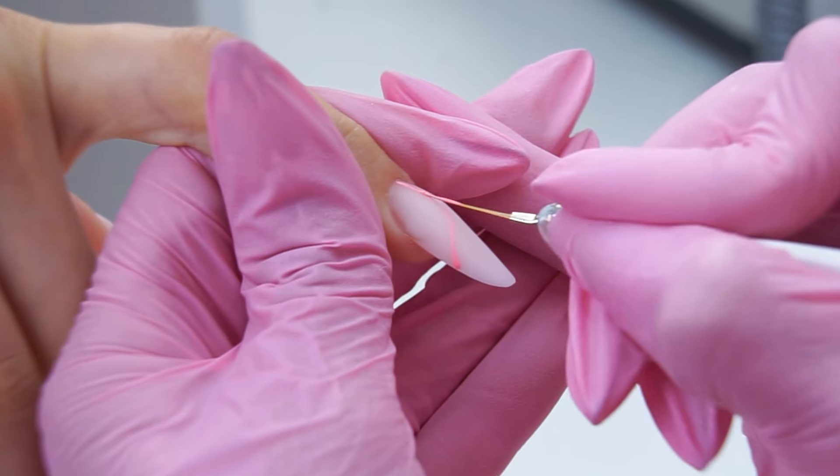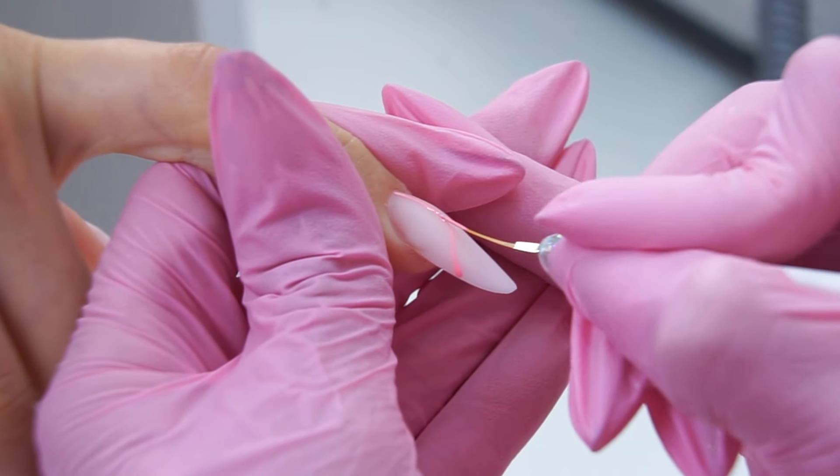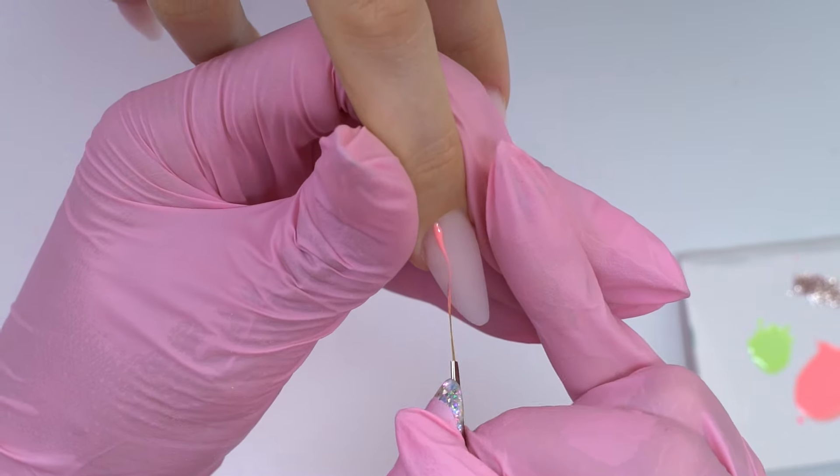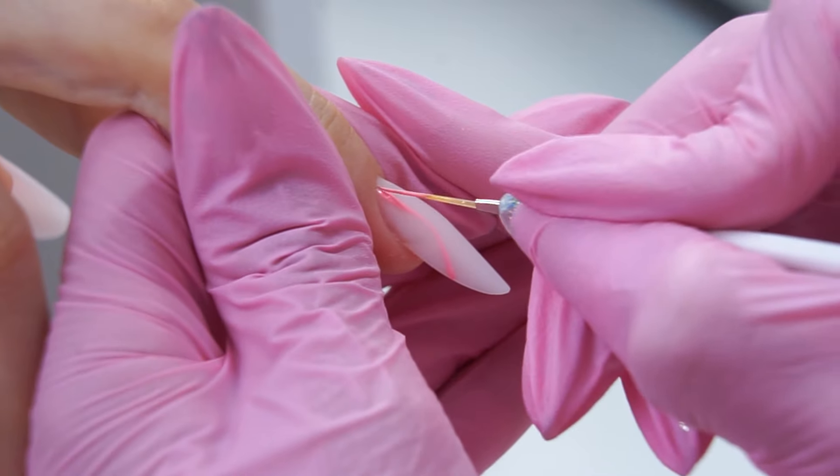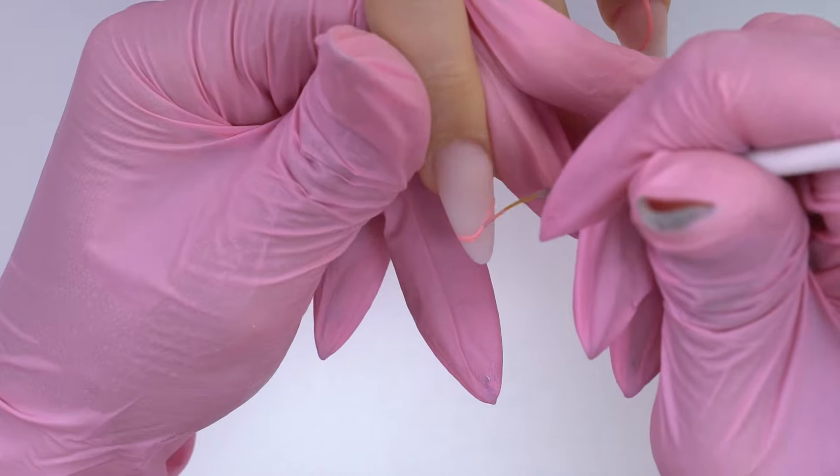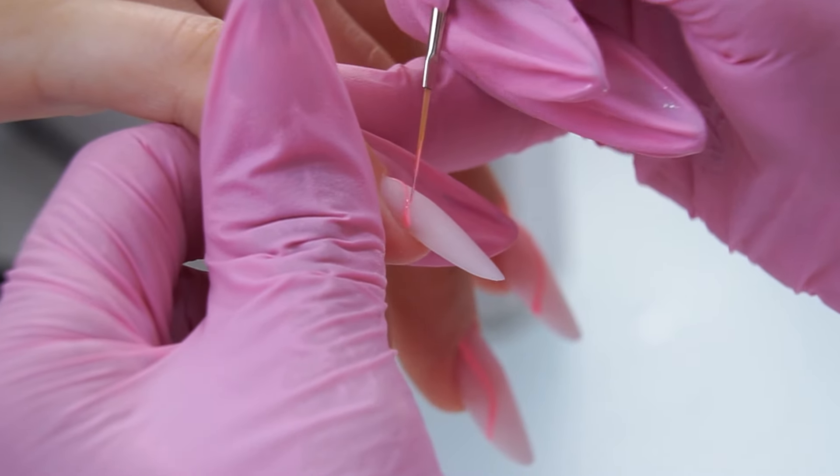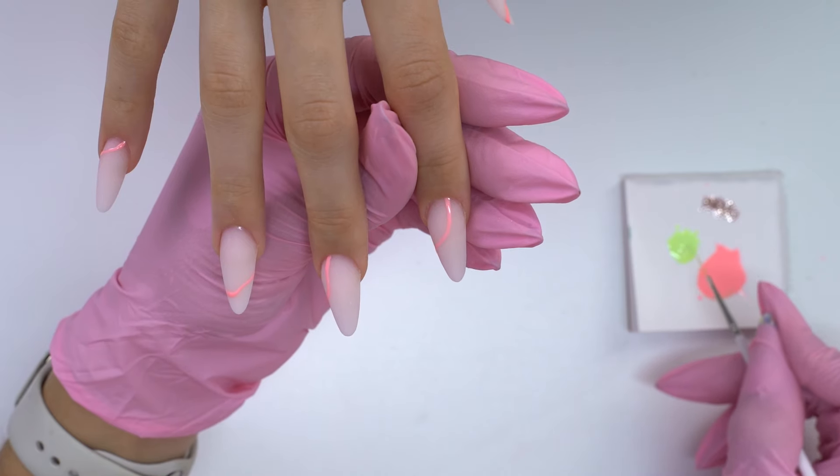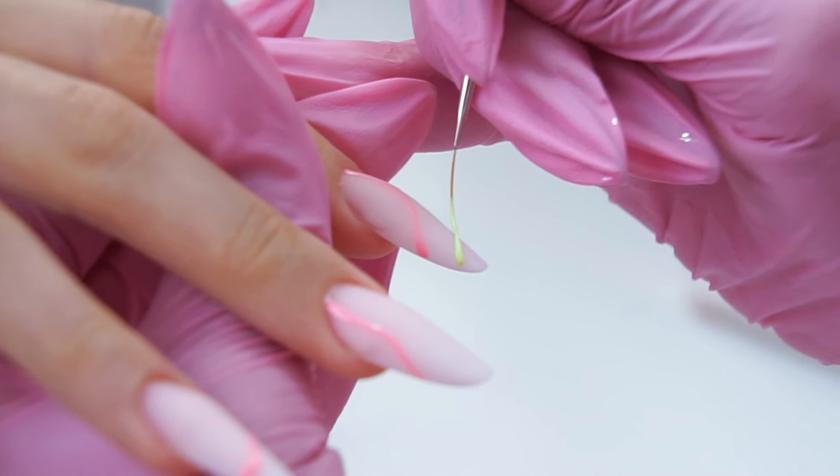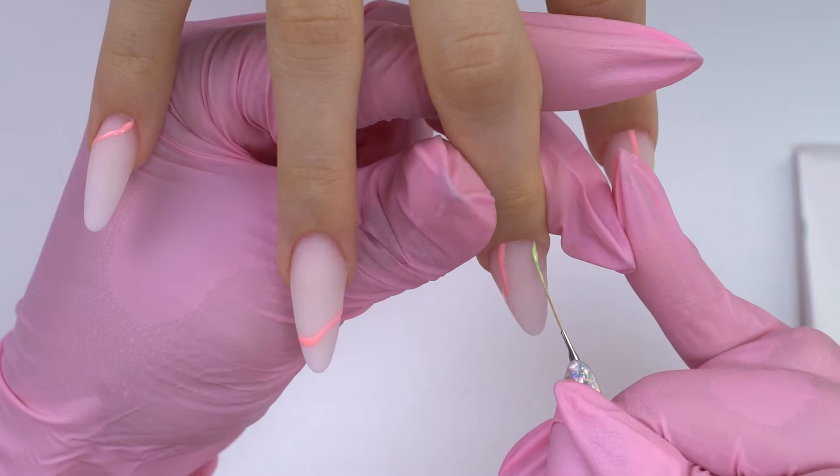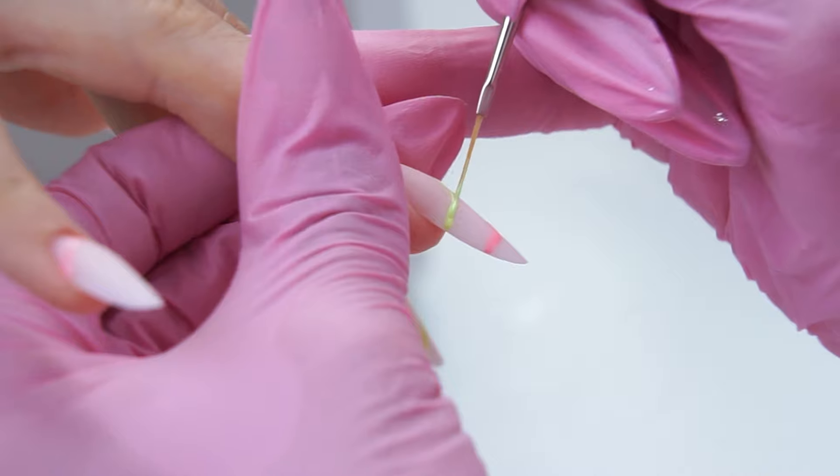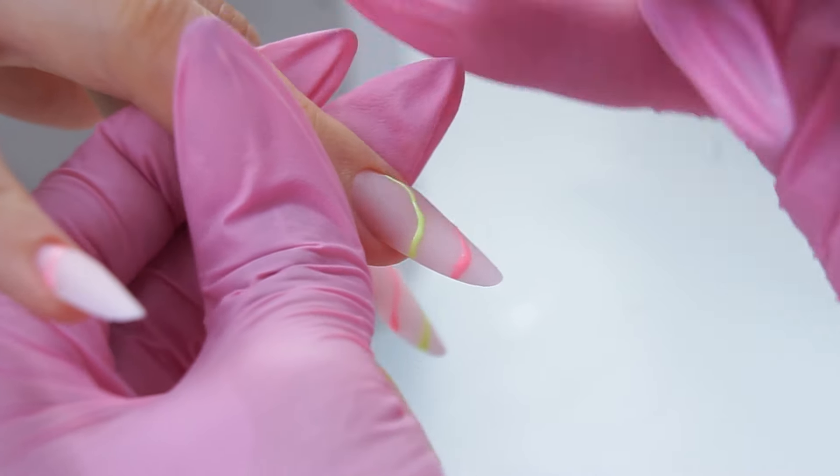I paint such lines using my thin French brush. First I paint all the pink lines. And then add green ones a bit higher. And between them I will paint a glitter line. So this design is very simple. Anyone can do it. But it looks amazing.